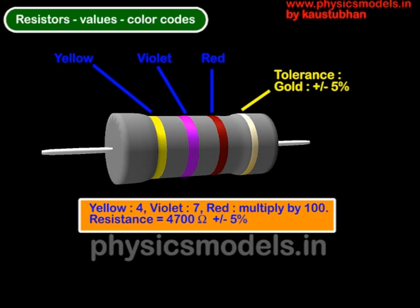So here you have a resistor with a yellow, violet, red and a gold band. So yellow means 4, violet is 7, red means multiplied by 100 so we get 4700 ohms. The last band is for tolerance only.